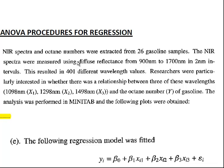NIR spectra and octane numbers were extracted from 26 gasoline samples. The NIR spectra was measured using diffuse reflectance from 900 nanometers to 1700 nanometers in 2 nanometer intervals. This resulted in 401 different wavelength values. Researchers were particularly interested in whether there was a relationship between three of these wavelengths and the octane number of the gasoline. So we have three predictor variables.